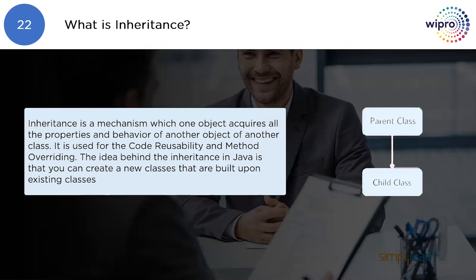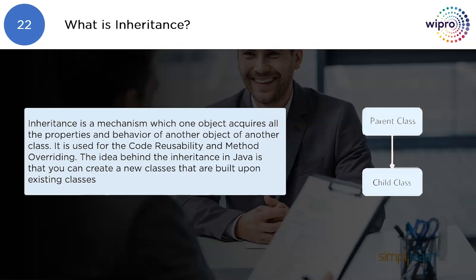What is inheritance? Inheritance is a mechanism in which one object acquires all the properties and behavior of another object of another class. It is used for code reusability and method overriding. The idea behind inheritance in Java is that you can create new classes that are built on top of existing classes.